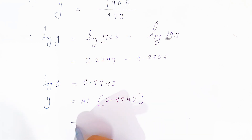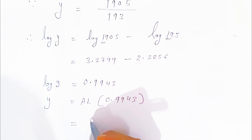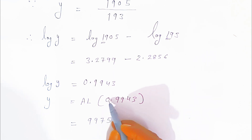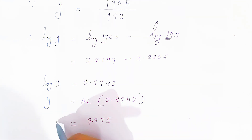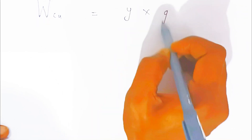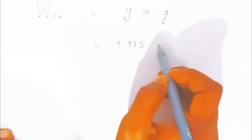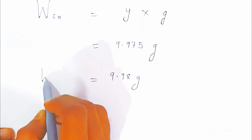In the antilog table, look up 0.99 at the fourth column and add the mean difference for 3, giving 9975. Since the characteristic is 0, there is one digit before the decimal, so the answer is 9.975. Therefore the weight of copper is 9.975 gram, and since the last digit is more than 5, we can round to 9.98 gram.